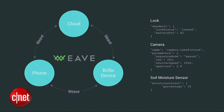For example, a camera can define what it means to take a picture, and all devices around it can understand that. A door lock can define lock and unlock as two phrases which all other devices in that ecosystem can understand and work off of each other.